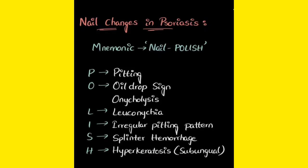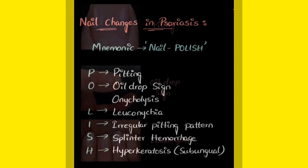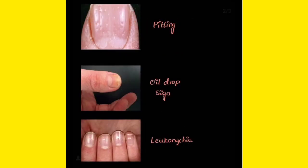Now look at this picture — the first picture shows pitting. You can see the small dot-like pits on the nail surface. The second is the oil drop sign — you can see it just like an oil drop; if someone pours some oil on the nail, it looks like that. That is known as the oil drop sign.